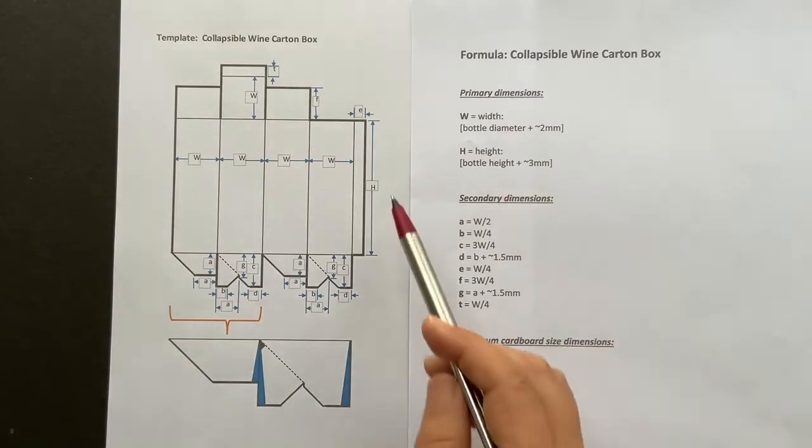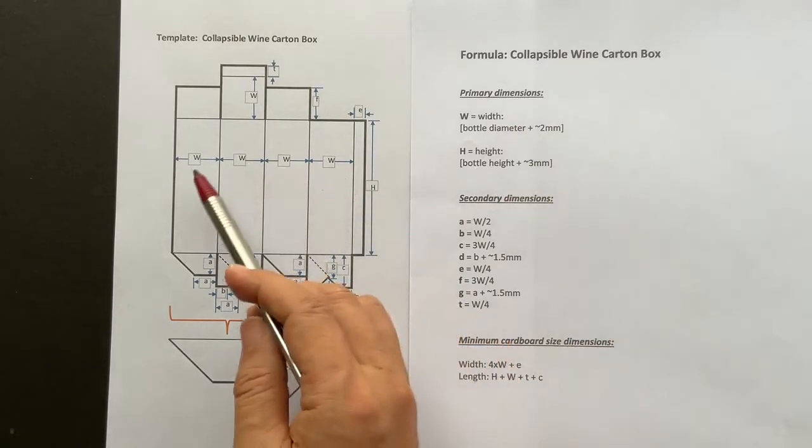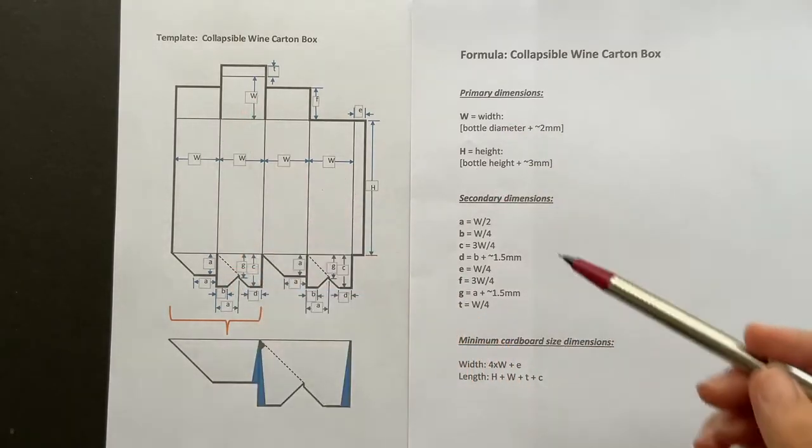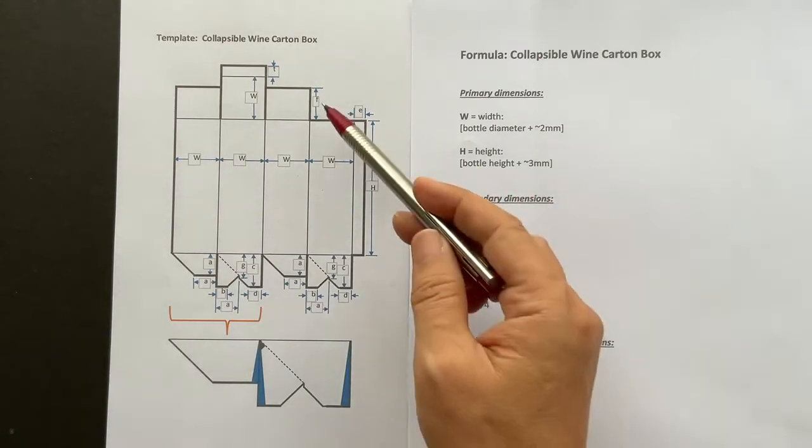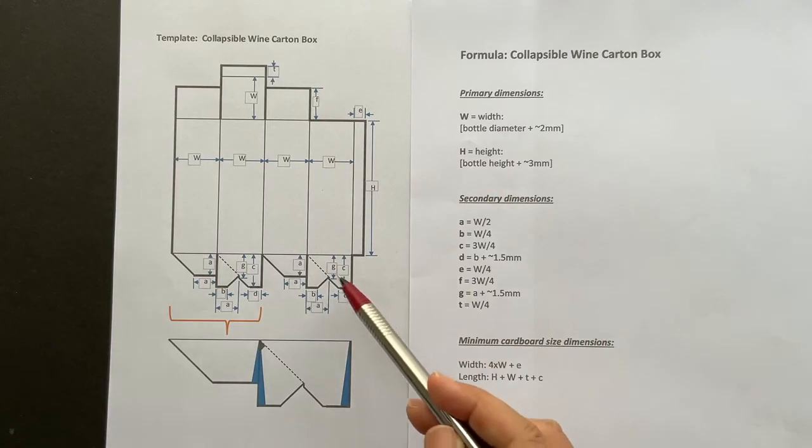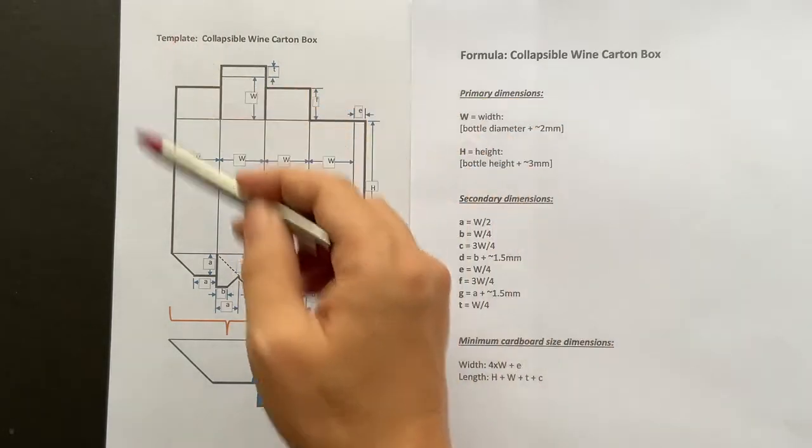The primary dimensions width and height are in uppercase letters indicated. The secondary dimensions are in lowercase and defined by the formulas. This one defines the minimum cardboard size you need for your box.